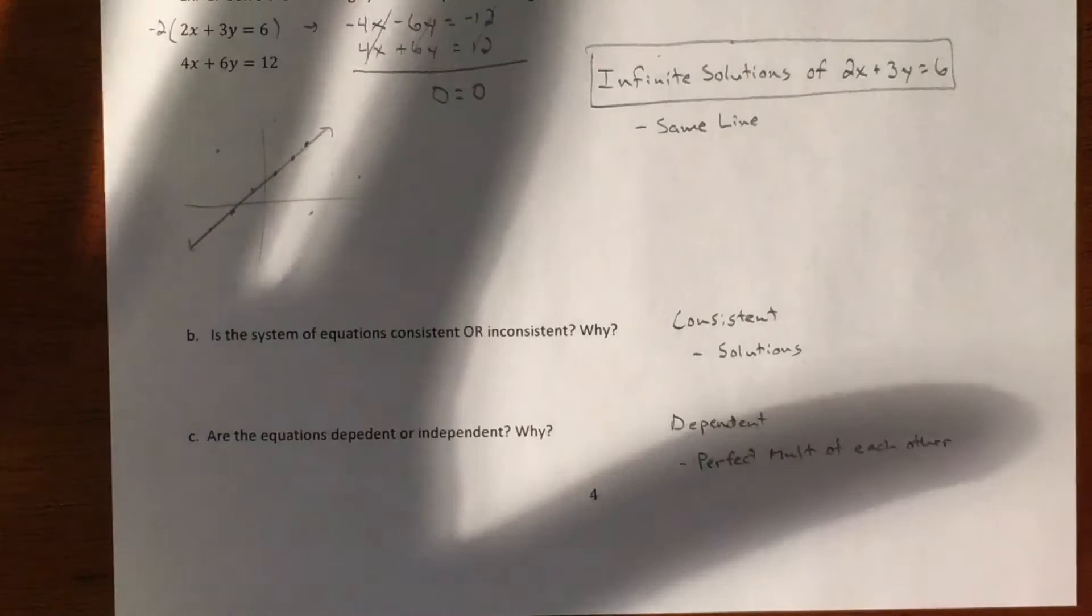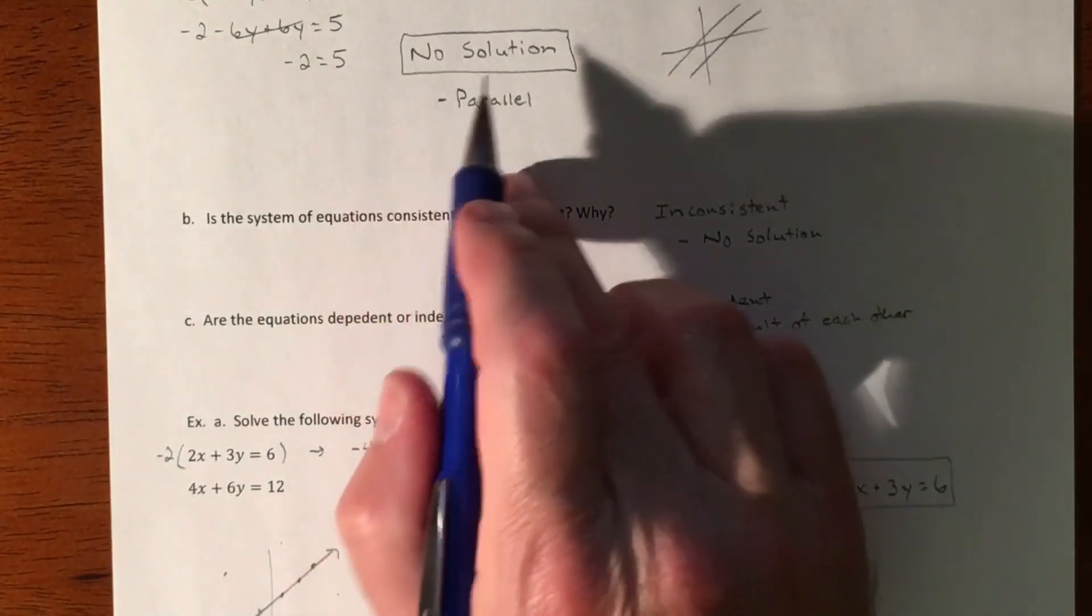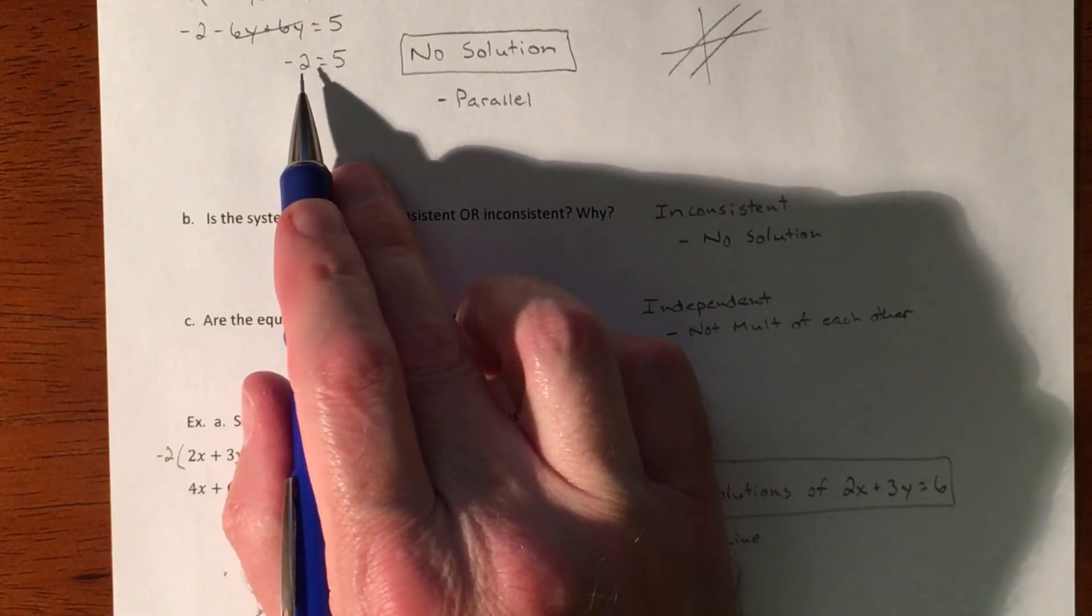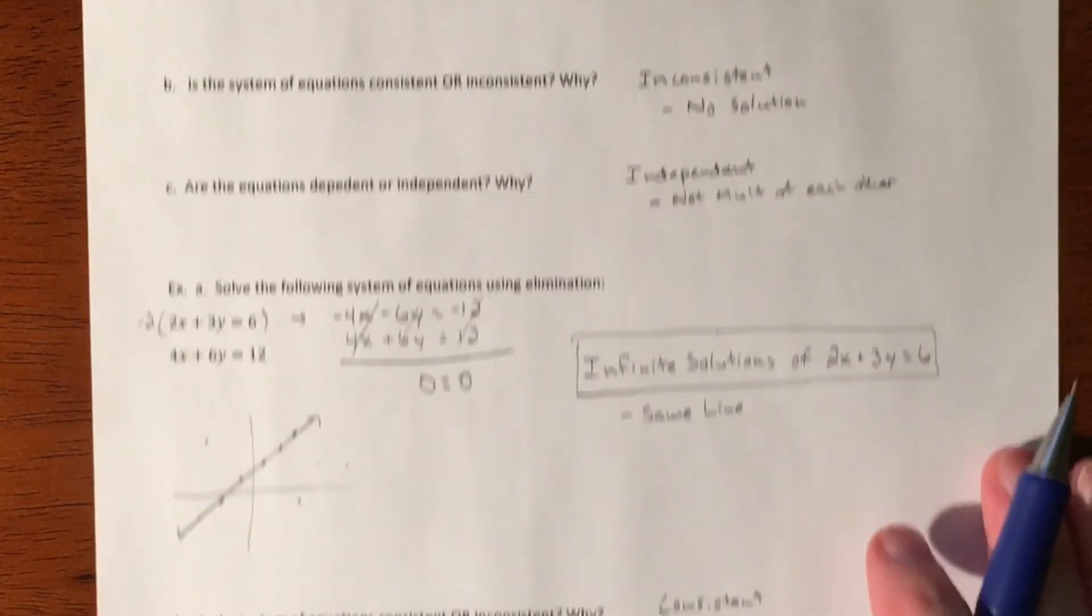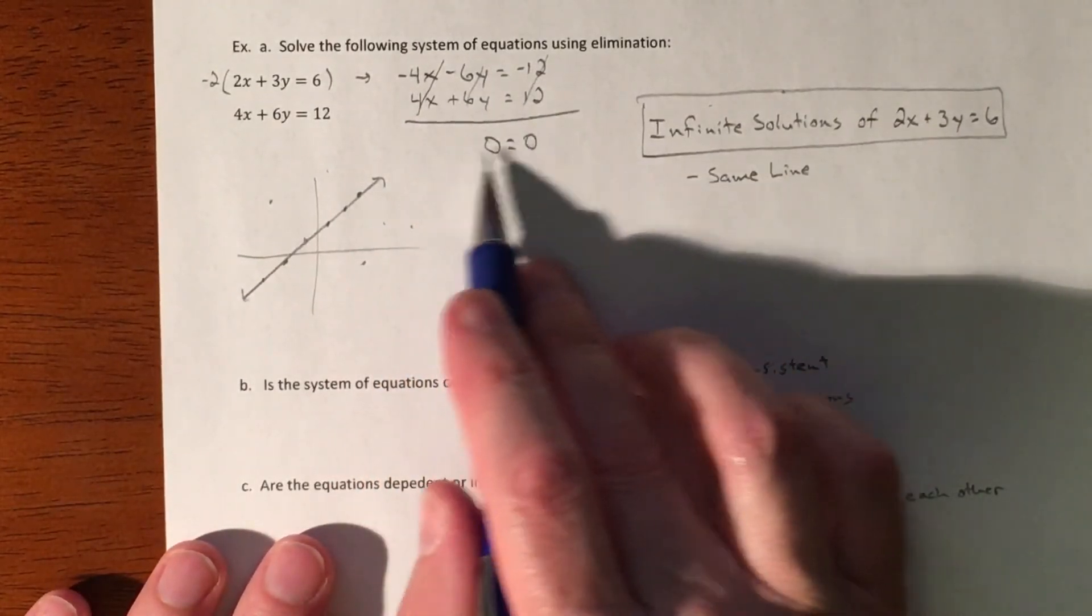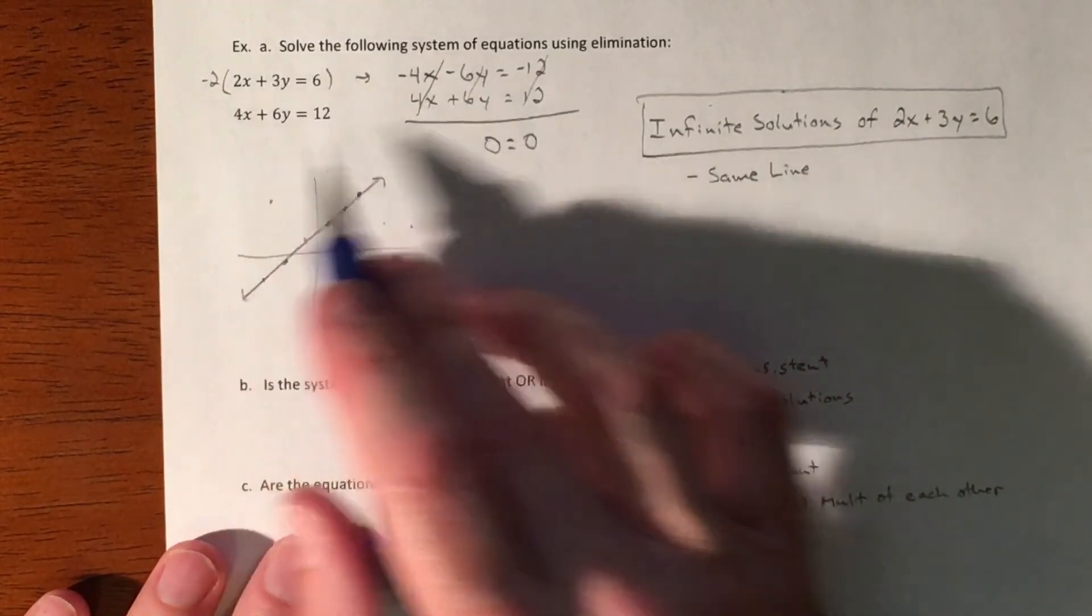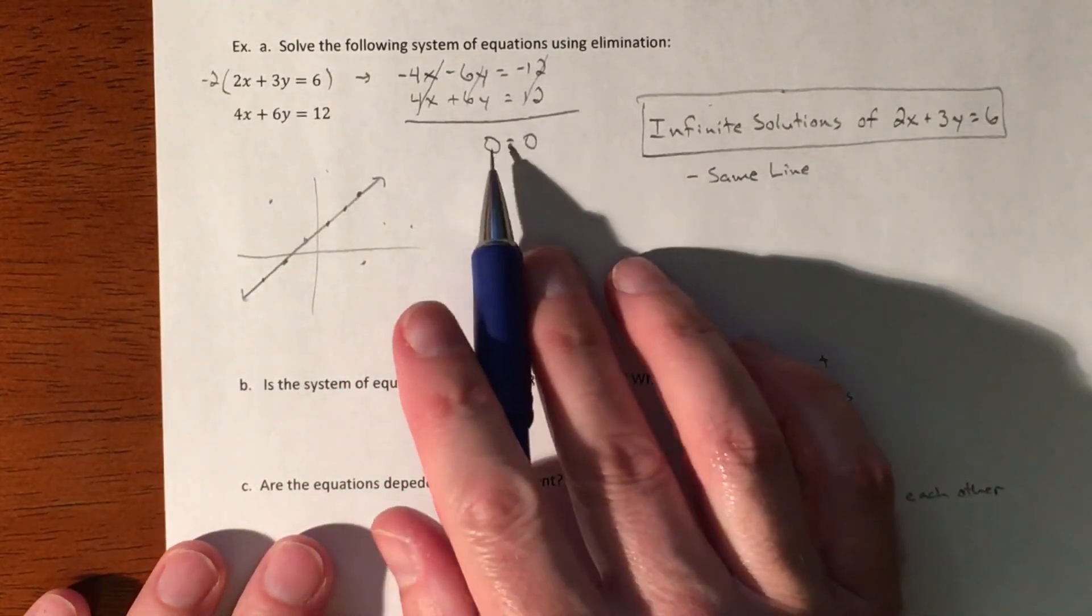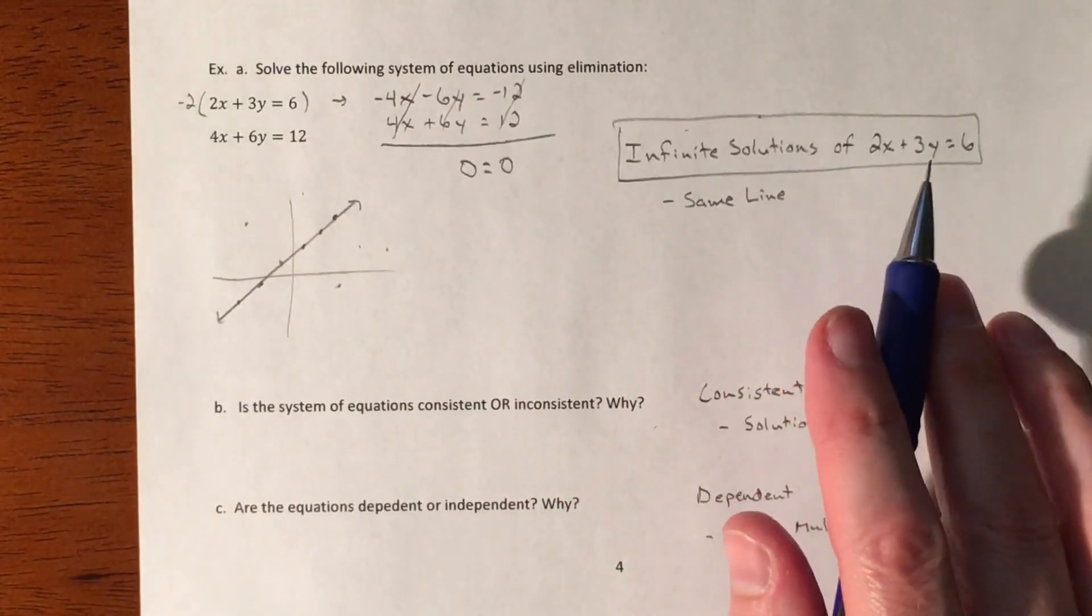So that was two problems, two different special cases. No solution because the variables went away but those numbers don't equal each other, so they're parallel. And then here everything went away but the numbers equaled each other. It doesn't have to be 0 equals 0, it could be 5 equals 5, depends on the problem. But if they match, then it's infinite solutions, and you always have to add that little bit of extra to it.